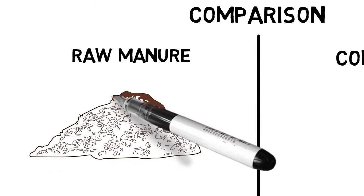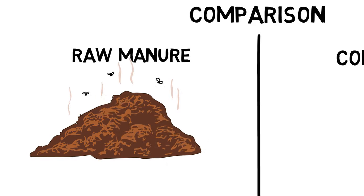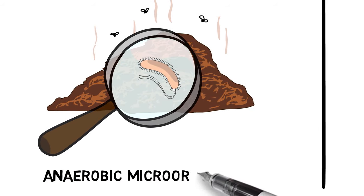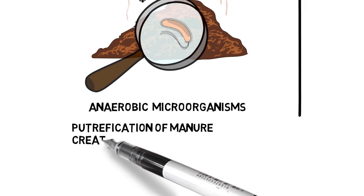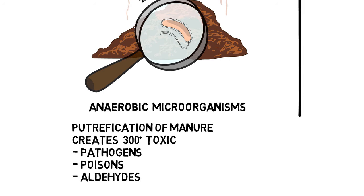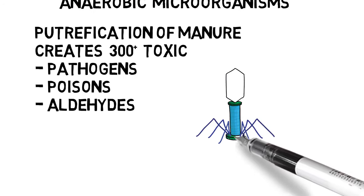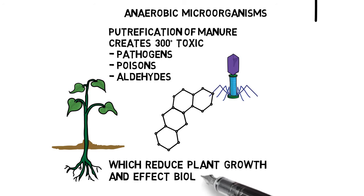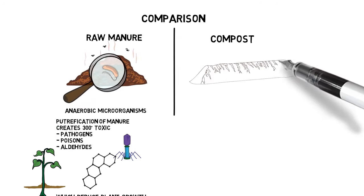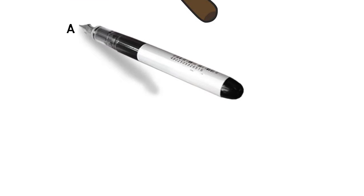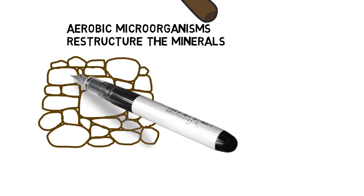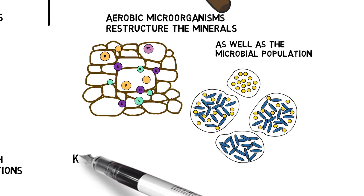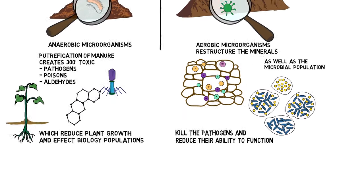Raw manure, because it sits for a period of time before it's often applied to the field in spring or fall, goes through a putrefaction process — an anaerobic pathogenic microorganism structure that creates very toxic and harmful pathogens, poisons, and aldehydes which are then moved into the field environment, reducing plant growth and affecting biology populations. With composted manure, the aerobic microorganisms not only restructure the minerals but also restructure the microbial populations and kill the pathogens, reducing their ability to function whatsoever.